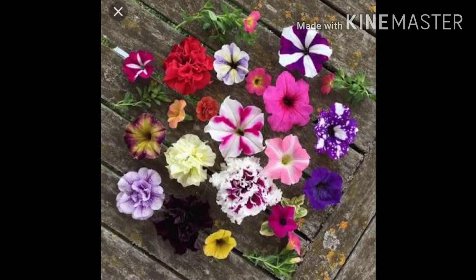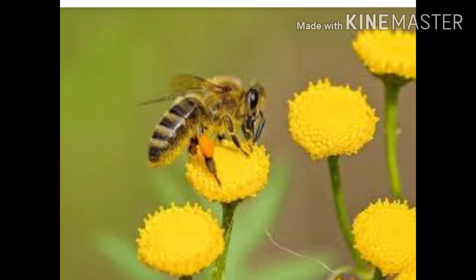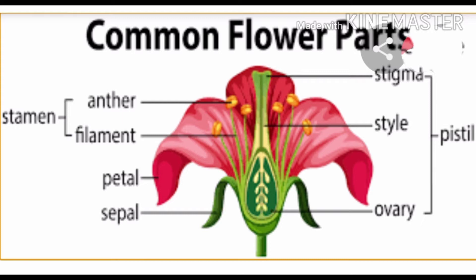Flowers come in many different shapes, sizes and colors. They are the reproductive part of a plant that gradually develops into fruits. They are not only involved in reproduction but are also a source of food for other living organisms. They are a rich source of nectar. Flowers can either be complete or incomplete.